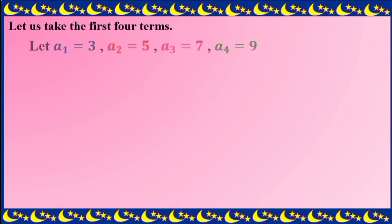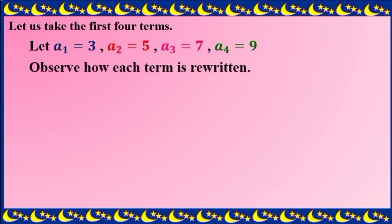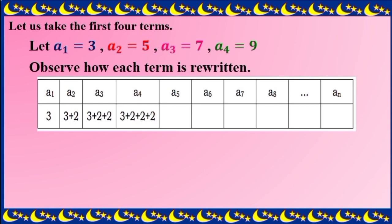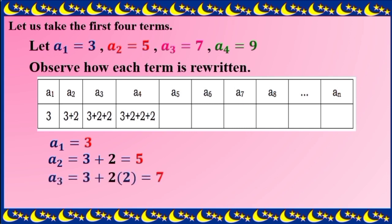Now, let us take the first 4 terms: 3, 5, 7, and 9. Observe how each term is derived. As you can see in the table, the first term is 3. To get the second term, the first term is added by 2 to make it 5 — so 3 plus 2 is 5. For the third term, we have additional 2 canned goods: 5 plus 2 gives us 7, or it can also be written as 3 plus 2 times 2, since 2 times 2 is 4, plus 3 equals 7.